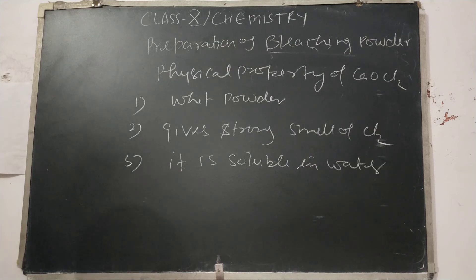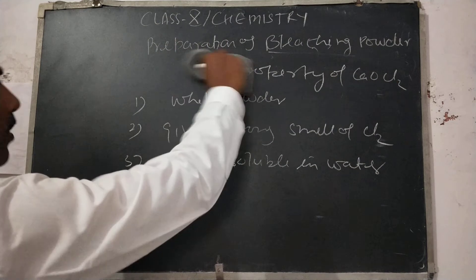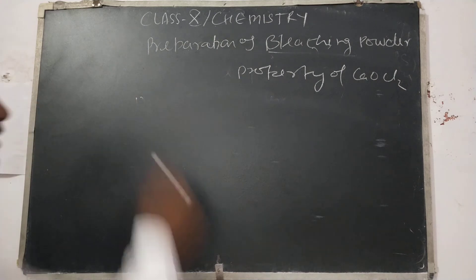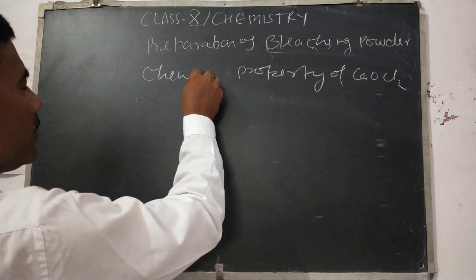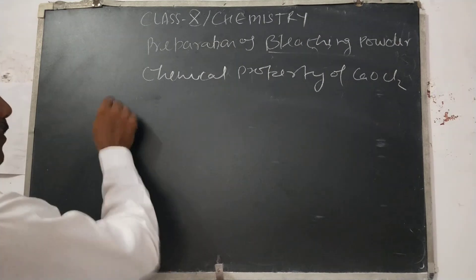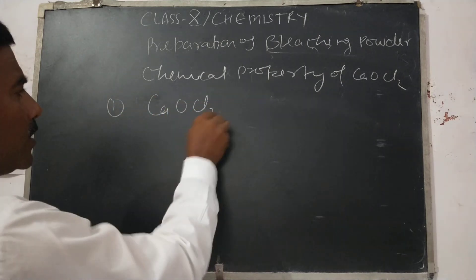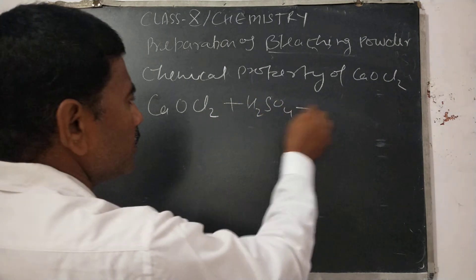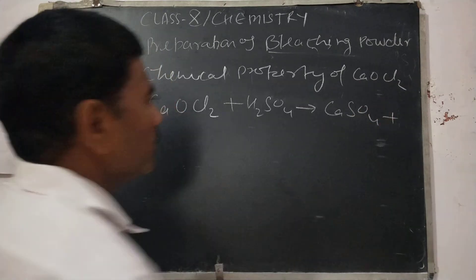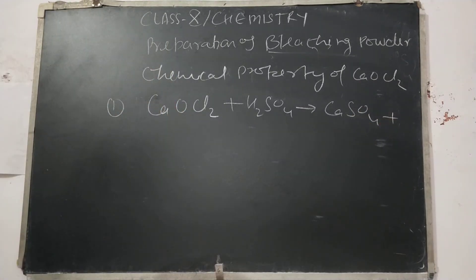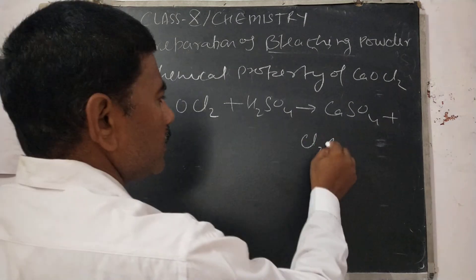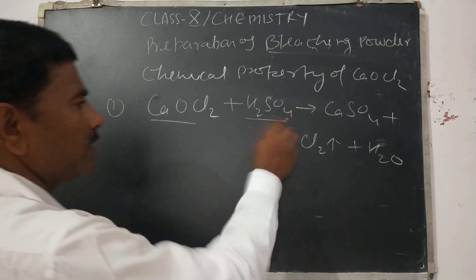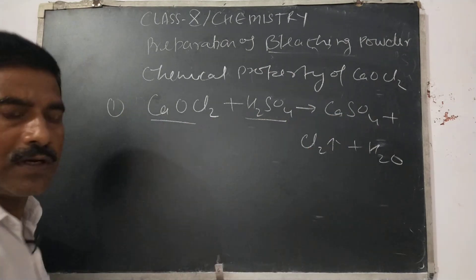Now let us look at the chemical properties. If bleaching powder reacts with a salt or an acid, what will be formed? If it reacts with an acid — this is a salt, this is an acid — calcium sulphate will be formed and chlorine gas will be released, along with water molecules.